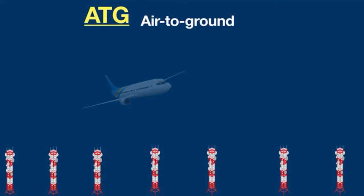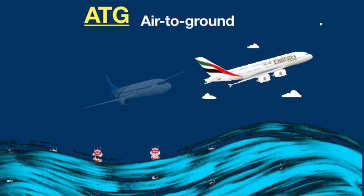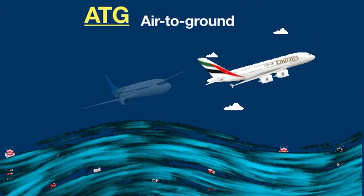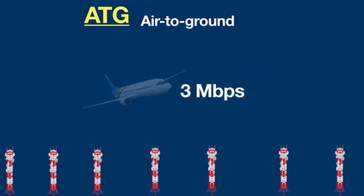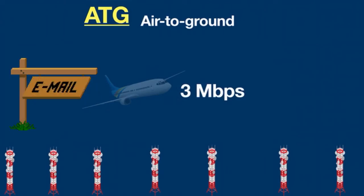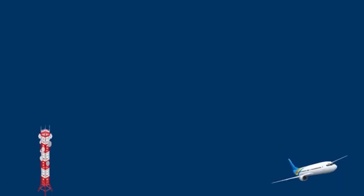However, this system cannot work when the plane is flying over water — obviously, you cannot place towers on the ocean. Another issue is speed: it provides only 3 megabits per second, just enough to read and check emails or text messages.